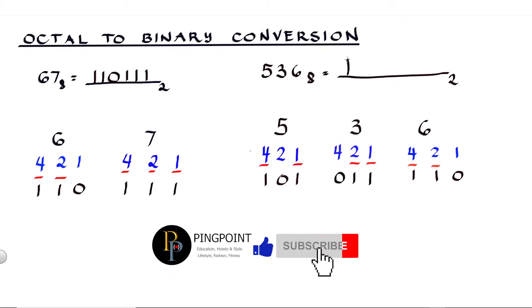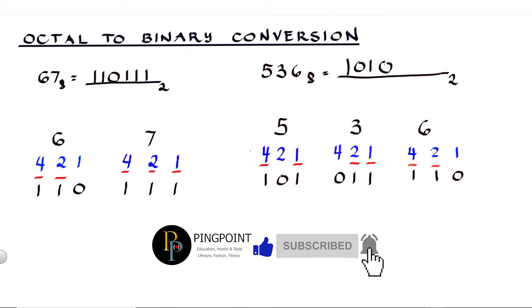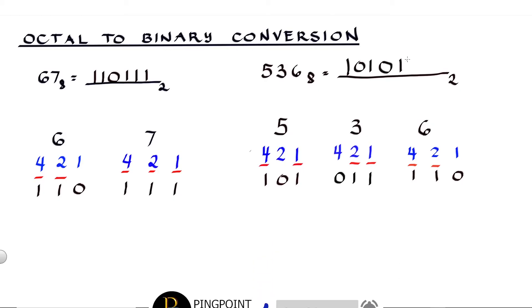So the binary equivalent of 536 octal is 101 011 110.